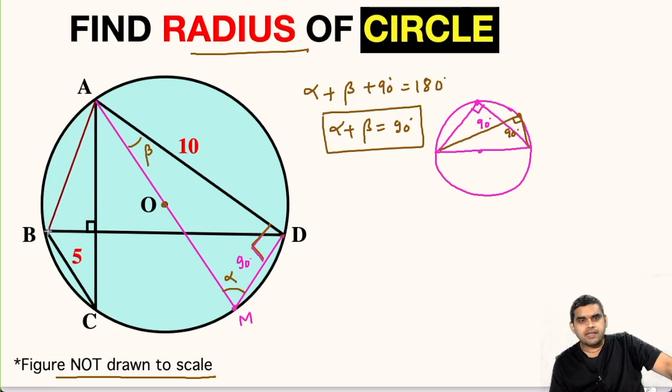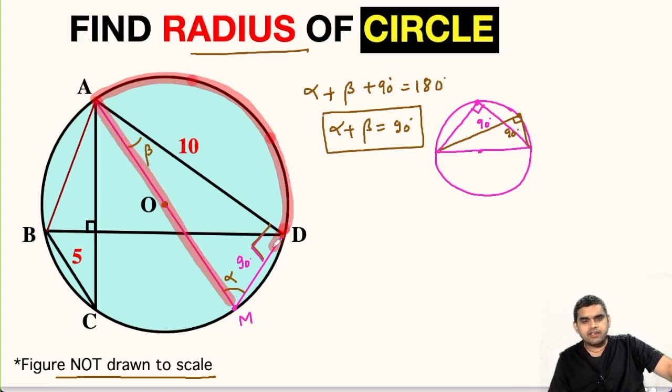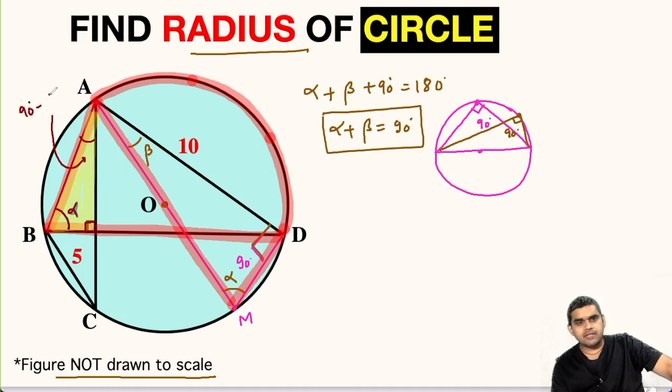Now let us join points A and B. Now focus on this arc AD. This arc AD is subtending angle alpha here. Likewise, this arc is subtending this angle also. So this angle will also be equal to alpha. Now if we see this triangle, this is a right angle triangle. One angle is 90 degrees, the other one is alpha. So this will be 90 minus alpha, which can be written as equal to beta because from this relation we can get beta equals 90 degrees minus alpha.